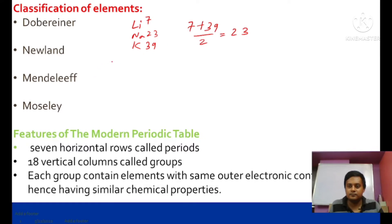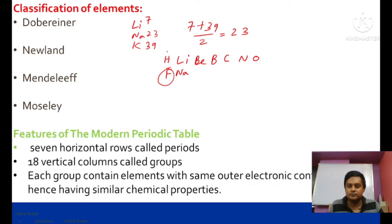Next is Newland's Law of Octaves — called 'octave' because it is a group of 8 elements. At that time, noble gases had not been discovered. So: hydrogen, lithium, beryllium, boron, carbon, nitrogen, oxygen, fluorine, sodium... If we arrange elements by increasing atomic weight, the eighth element will repeat the properties of the first one.